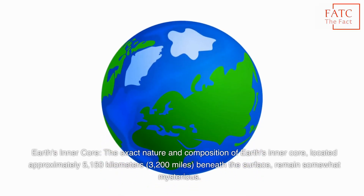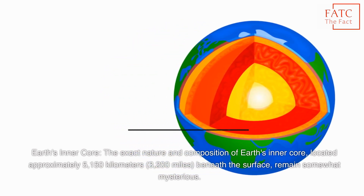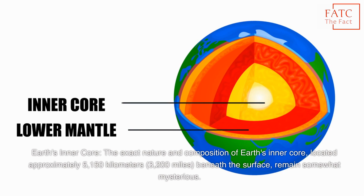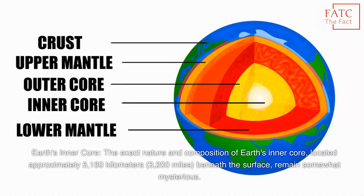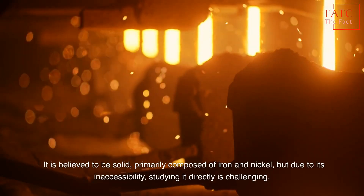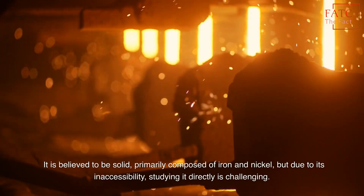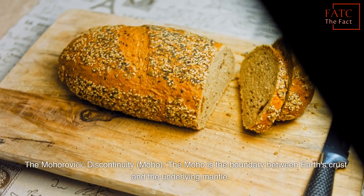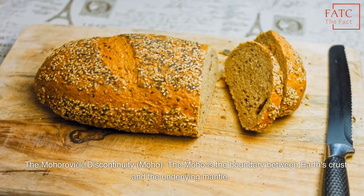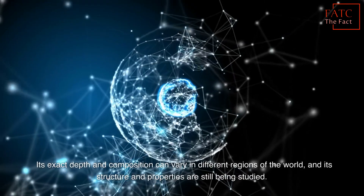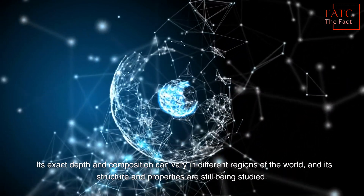Earth's Inner Core: The exact nature and composition of Earth's inner core, located approximately 5,150 km beneath the surface, remains somewhat mysterious. It is believed to be solid, primarily composed of iron and nickel, but due to its inaccessibility, studying it directly is challenging. The Mohorovicic discontinuity, or Moho, is the boundary between Earth's crust and the underlying mantle. Its exact depth and composition can vary in different regions of the world, and its structure and properties are still being studied.